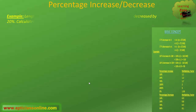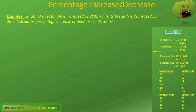Now, let's solve this example by applying the concept of multiplying factor, and we will see how these multiplying factors are useful in solving such kind of questions. First of all, we will go through the question. It says: length of a rectangle is increased by 20%, while its breadth is decreased by 20%. Calculate the percentage increase or decrease in its area.